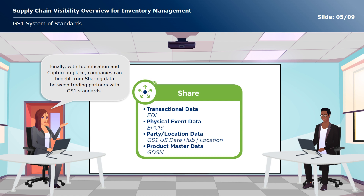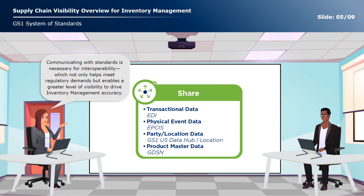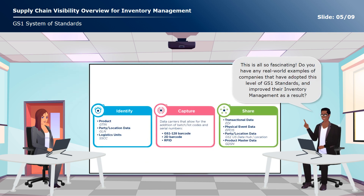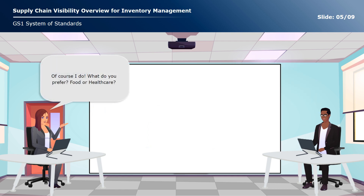Finally, with identification and capture in place, companies can benefit from sharing data between trading partners with GS1 standards. Communicating with standards is necessary for interoperability, which not only helps meet regulatory demands, but enables a greater level of visibility to drive inventory management accuracy. This helps companies be more resilient by reacting and adapting quickly to changes in supply and demand. Do you have any real-world examples of companies that have adopted this level of GS1 standards and improved their inventory management as a result?